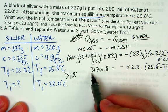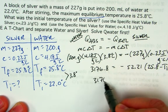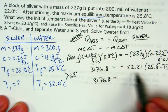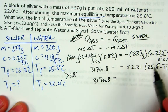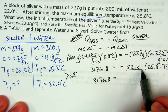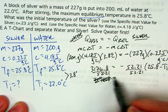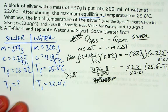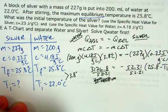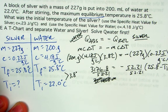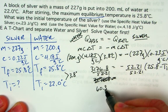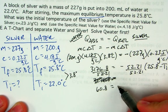The left side is already simplified, so I'll bring it down. Then I'll divide both sides by 52.21. Taking 3176.8 divided by 52.21, I get 60.8. I didn't bring over the negative sign yet, so I'll leave that here — it's going to be negative (25.8 minus T-initial).